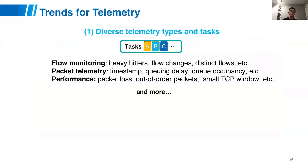While we keep pushing towards improving all these solutions, there are also new trends in telemetry. First, we keep seeing diverse telemetry types and tasks, and there will definitely be new tasks coming out. For flow monitoring, we have heavy hitters, flow changes, or count of distinct flows. For packet telemetry, we can record certain fields like timestamps, queuing delay, or queue occupancy, etc., and add them into every packet. For performance-related metrics, we can check packet loss, out-of-order packets, or small TCP windows, etc.